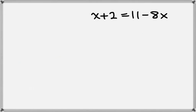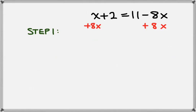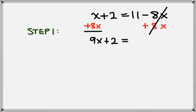Let's look at one more. Here we have x plus 2 equals 11 minus 8x. The first thing we'll do again is combine the x terms, so we'll add 8x to the right hand side, and we'll do that to the left hand side as well. On the right, the minus 8x and the 8x cancel, so we're just left with 11. And on the left, we have x plus 8x, which gives us 9x, and we still have the 2.